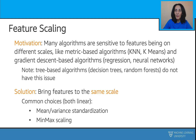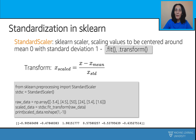The StandardScaler in sklearn scales values of a numerical feature to be centered around mean 0 and standard deviation 1. On a short example array — minus 3.4, 4.5, 50, 24, 3.4, and 1.6 — the StandardScaler from the preprocessing module in sklearn returns: minus 0.9, minus 0.47, 1.98, 0.57, minus 0.53, and minus 0.63.